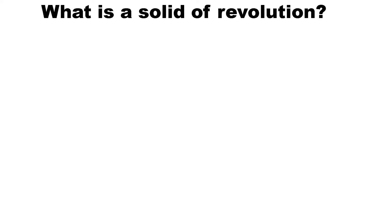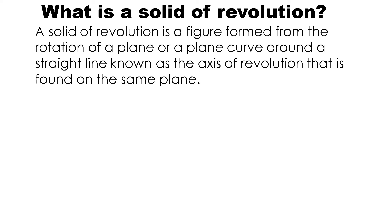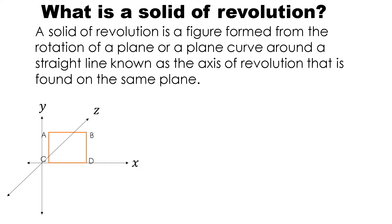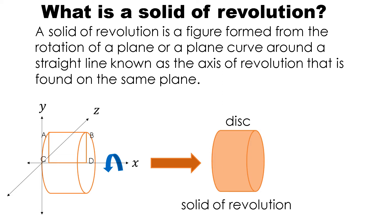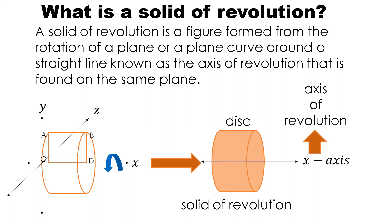What is a solid of revolution? A solid of revolution is a figure formed from the rotation of a plane or a plane curve around a straight line known as the axis of revolution that is found on the same plane. If we draw a rectangular plane ABCD and let this plane revolve or rotate around the x-axis, we will be forming a solid — a disk — which is known as a solid of revolution. The x-axis where the plane had revolved is called the axis of revolution.